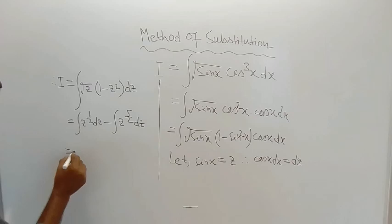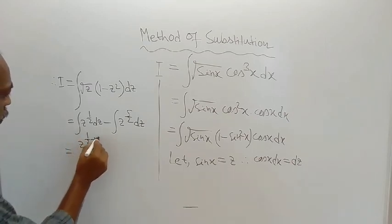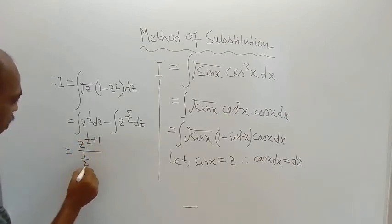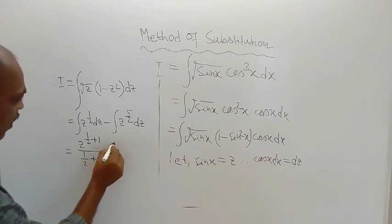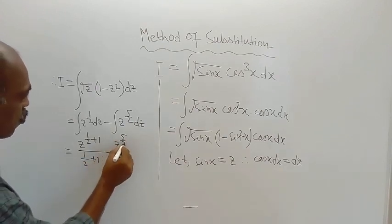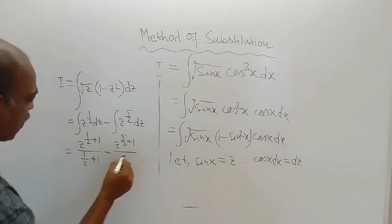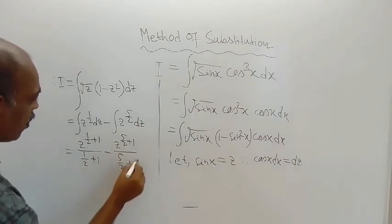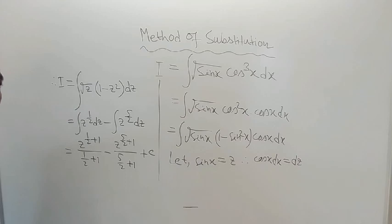For the first one, the integration is z to the power half plus 1, divided by half plus 1. And for the second one, it is z to the power 5 by 2, plus 1, divided by 5 by 2, plus 1, plus a constant of integration, c.